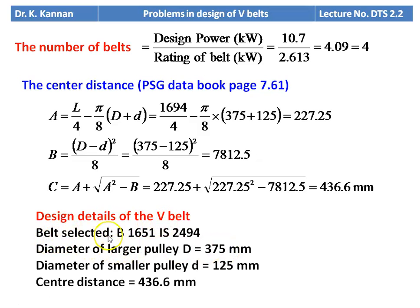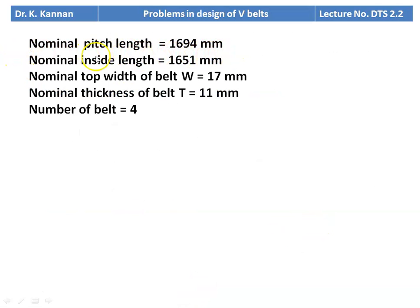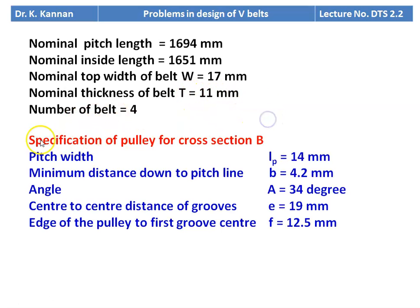Design details: belt selected is B1651 IS 2494, diameter of larger pulley = 375 mm, smaller pulley = 125 mm, center distance = 436.6 mm, nominal pitch length = 1694 mm, nominal inside length = 1651 mm, top width W = 17 mm, thickness = 11 mm, number of belts = 4. Pulley specification for section B: LP = 14 mm, B = 4.2 mm, 2β = 34 degrees, groove spacing E = 19 mm, F = 12.5 mm.